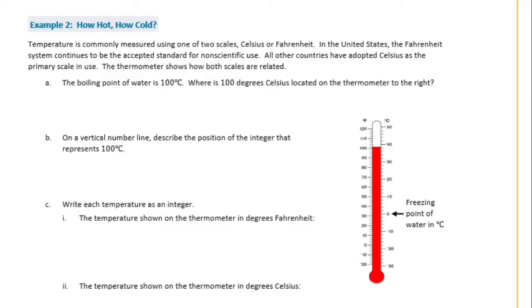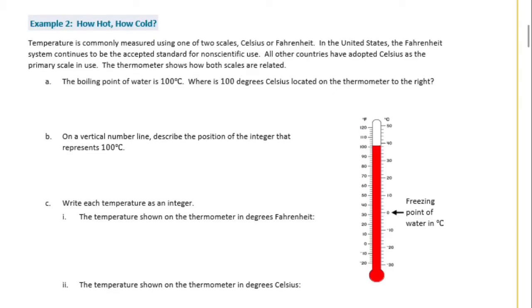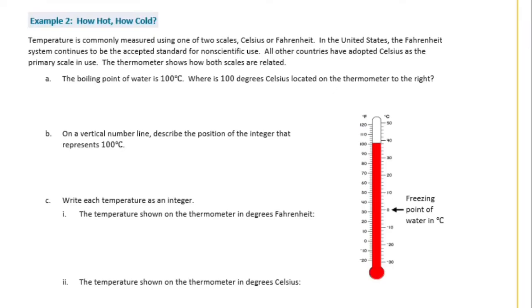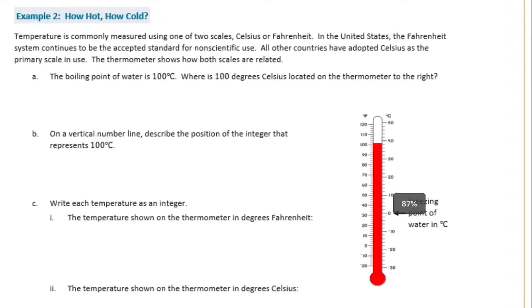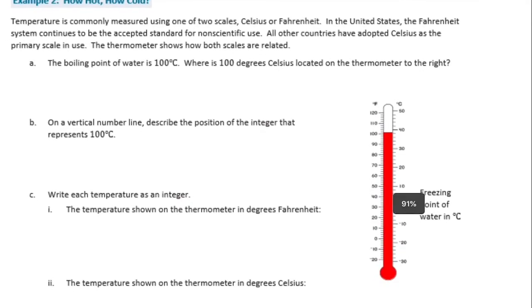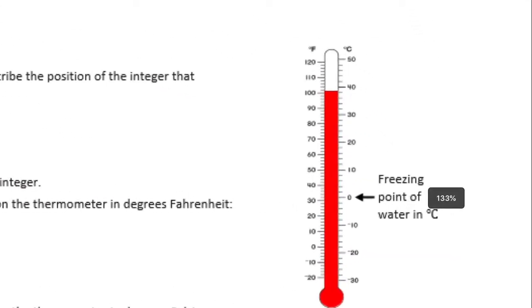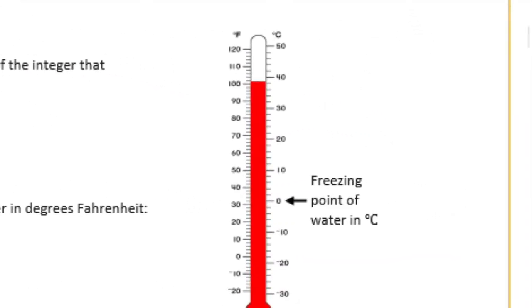Example two: how hot, how cold. Temperature is commonly measured using one of two scales, Celsius or Fahrenheit. In the United States, the Fahrenheit system continues to be the accepted standard for non-scientific use. All other countries have adopted Celsius as the primary scale in use. The thermometer shows how both scales are related. The boiling point of water is 100 degrees Celsius. Where is 100 degrees Celsius located on the thermometer to the right? Okay, so 100 degrees Celsius.